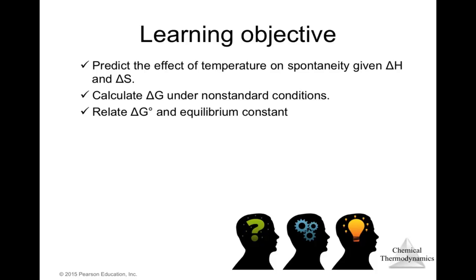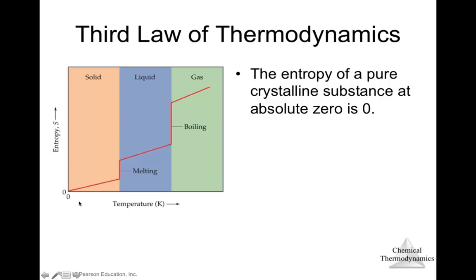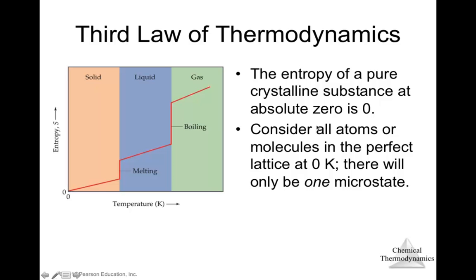The third law of thermodynamics establishes that the entropy of a pure crystalline substance at absolute zero is zero. At zero Kelvin, all atoms or molecules are in a perfect lattice, giving only one microstate. Using the equation S = k·ln(W), the natural logarithm of one is zero, so entropy is zero at absolute zero.